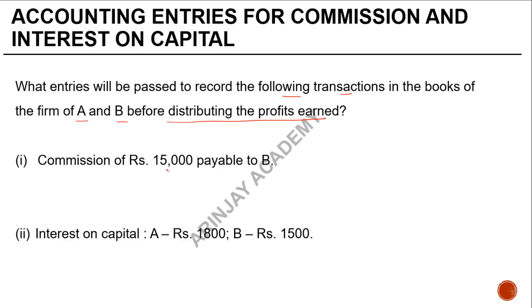Commission of Rs 15,000 is payable to B. Generally, the commission which is to be paid to the partner is considered as an appropriation of profit. Since it's an appropriation of profit, it has to go through the profit and loss appropriation account. So whenever you have a commission, the first entry you pass is partner's commission.